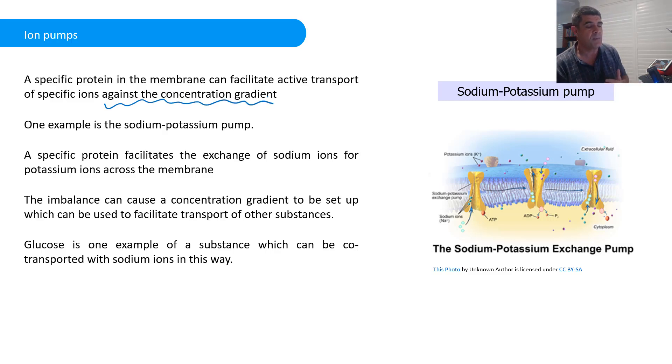The sodium-potassium pump is really important. Probably the most important place where this occurs is in our nervous system, in our neurons. And they are an electrical system. And that electrical system is based on the movement of charge. And sodium and potassium ions play a critical role in that movement of signals along neurons.